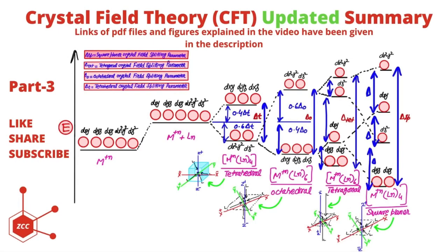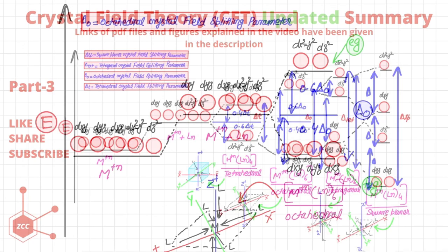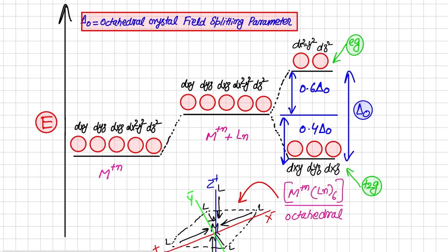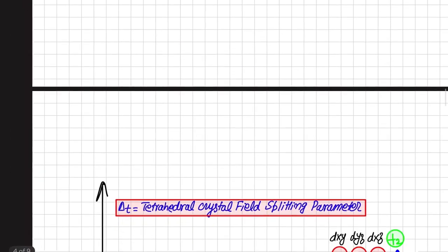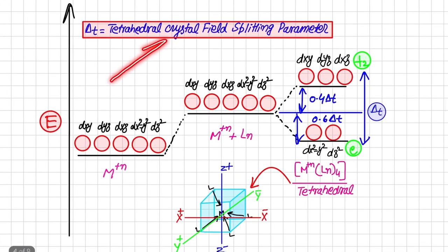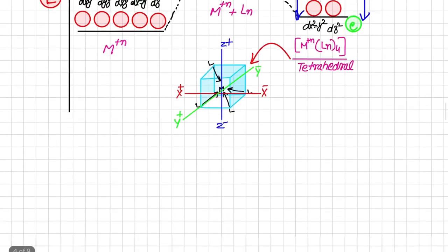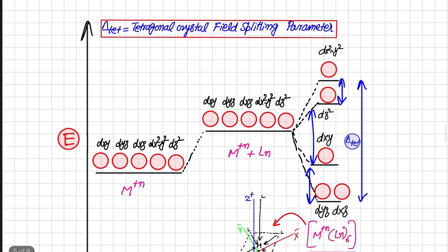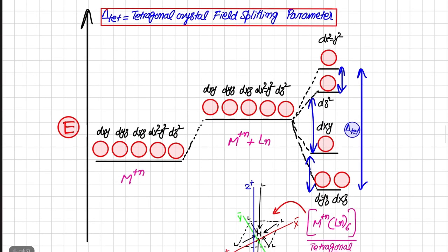Assalamu alaikum viewers. This is Part 3 of the lecture series about crystal field theory, updated and summarized version. In this particular lecture we will compare the crystal field splitting for different geometries. In the previous lecture we discussed octahedral and tetrahedral crystal field splitting. Today we will discuss another geometry called tetragonal geometry and its splitting pattern.